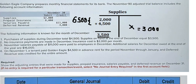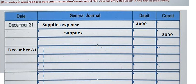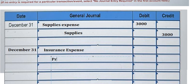The next one: we have insurance, and that is about 2000 per month. So we need to use prepaid insurance. We have insurance expense and prepaid insurance. That means we need to record the insurance expense at the end of the month, and that is about 2000.